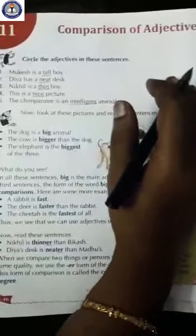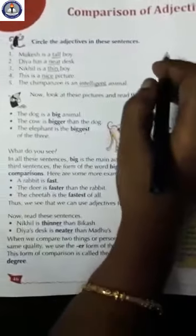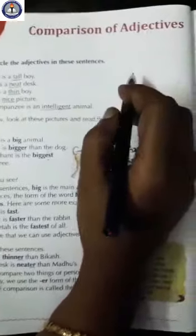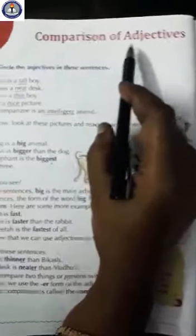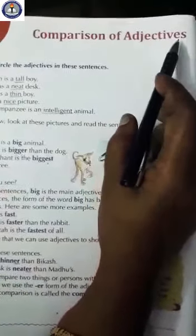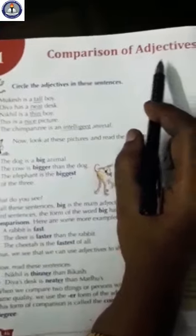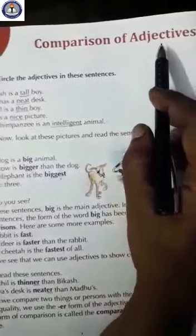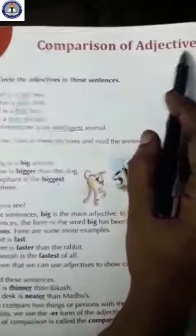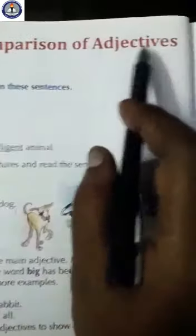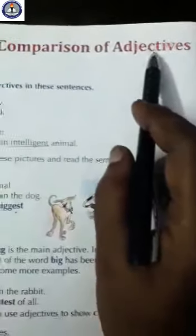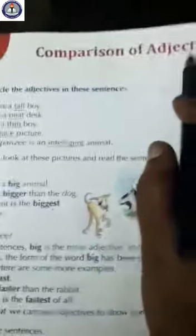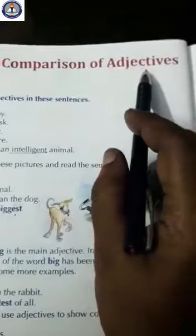Hello children, today we will learn chapter 11, Comparison of Adjectives of Class 3 English Grammar book. We have already discussed about adjectives. What is an adjective? An adjective is a describing word.